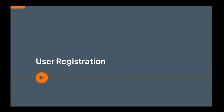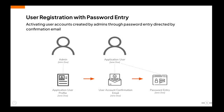Now that you have a basic idea of user account management, let's learn about the methods used to register users. WSO2 Identity Server enables activating user accounts via a password entry. In this approach, an administrator will first create a user account in the system, upon which a confirmation link will be emailed to the user's registered email ID.